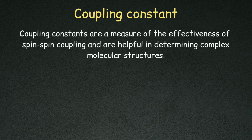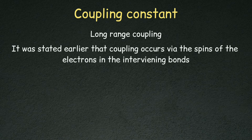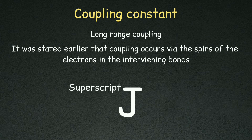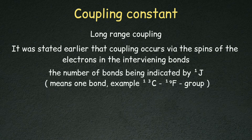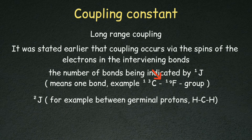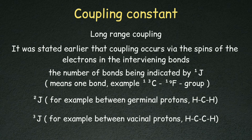The coupling constant tells us the effectiveness of spin-spin coupling and helps us determine complex molecular structure. The coupling is due to electron spin. We use a superscript on J to represent the number of bonds: J¹ represents a one-bond coupling constant, J² represents geminal protons over 2 bonds, and J³ represents vicinal protons over 3 bonds.